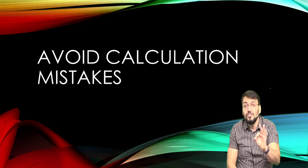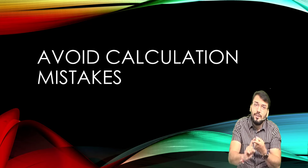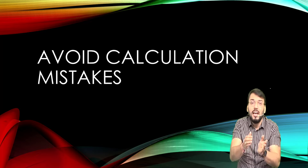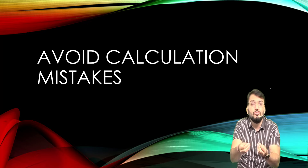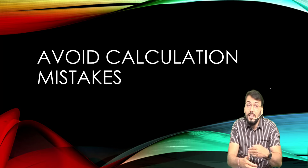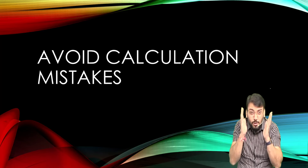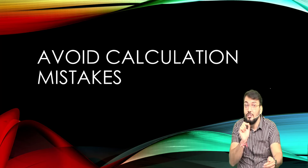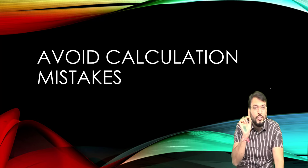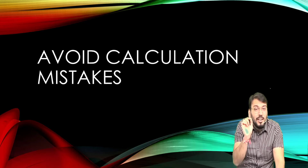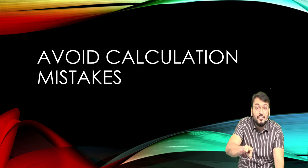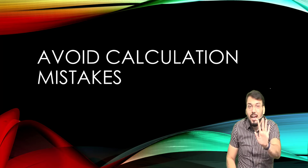The fourth mantra is: avoid small calculation and information mistakes. Students know the concept and can manage time, but they make small calculation or information mistakes — and because of that, out of a 6-mark question, they get only 2 or 3 marks. For the FR paper, you should be fully attentive while reading the questions. Have a good sleep, go to the exam hall with confidence, maintain full concentration while reading the question paper, and avoid information and calculation mistakes. If you avoid these two mistakes, your 40 marks can become 70 marks.